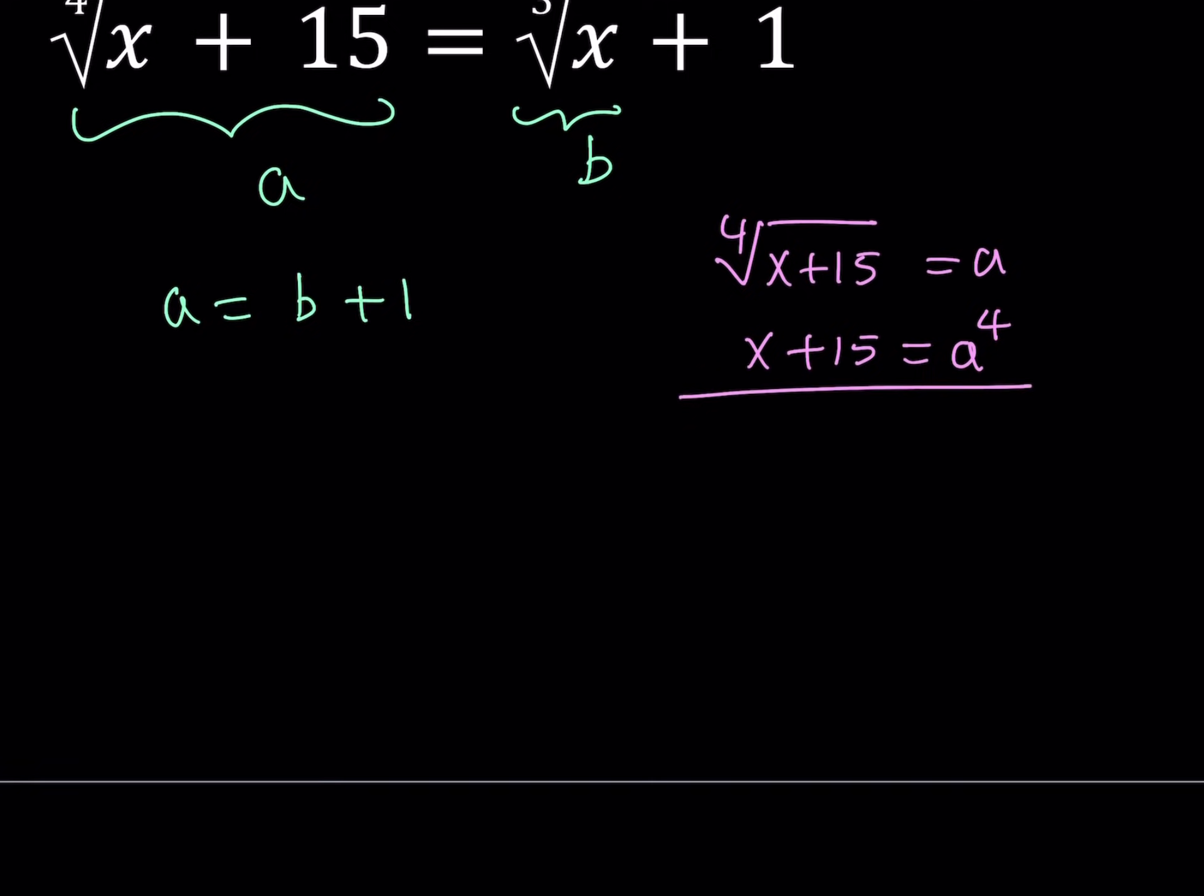Now, what else can I do? Well, the second one gives me cube root of x equals B. And, if I cube both sides, I get x equals B cubed. So, these two equations, basically we were able to get rid of the radicals by using these two equations.